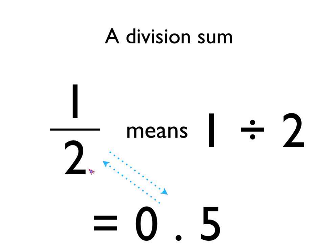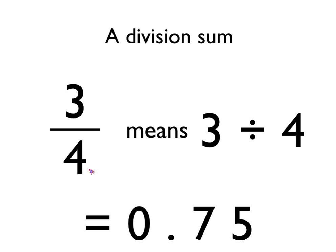So you can start to get a feel that there is a link between fractions and decimal numbers — we can start comparing the two. But we'll look at that in a later video. Three quarters as a fraction — three over four — means three divided by four. And if you type that into your calculator, you'll see that it comes out as 0.75. So there's a link between the fraction three quarters and 0.75; they actually mean the same thing.